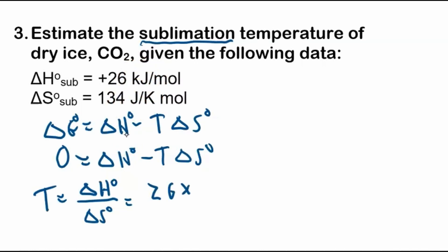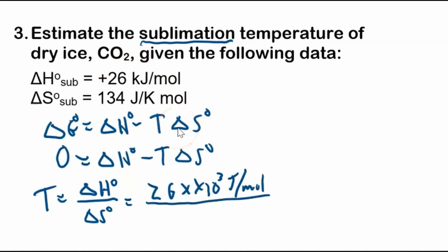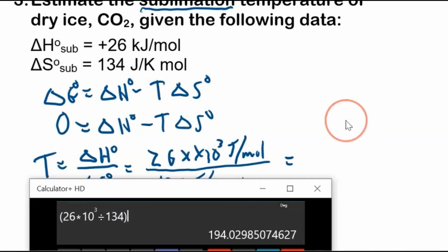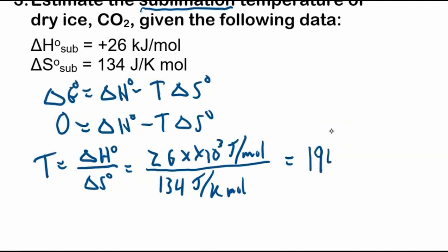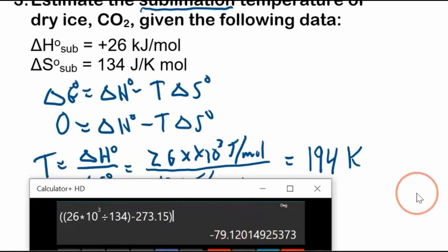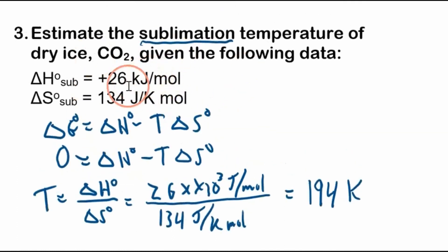Plugging in: 26 times 10³ joules per mole divided by 134 joules per Kelvin per mole gives approximately 194 Kelvin. Converting to Celsius by subtracting 273.15 gives about negative 79 degrees Celsius, which is very close to the accepted value. It's pretty cool that we can determine the phase change temperature just from thermodynamic data, without going to the lab, and we can do this for any substance as long as we have the data.